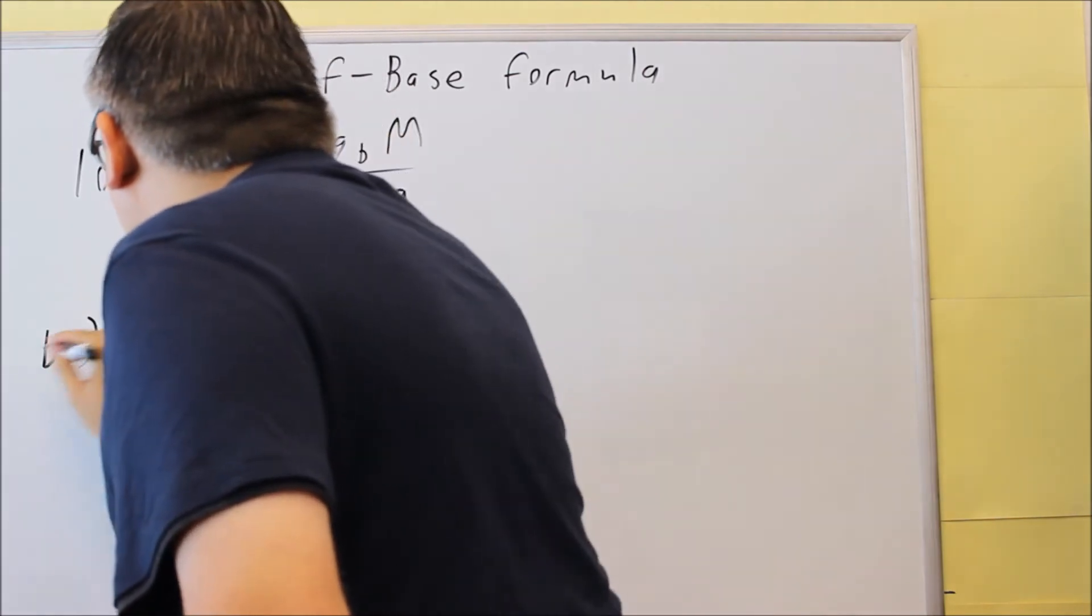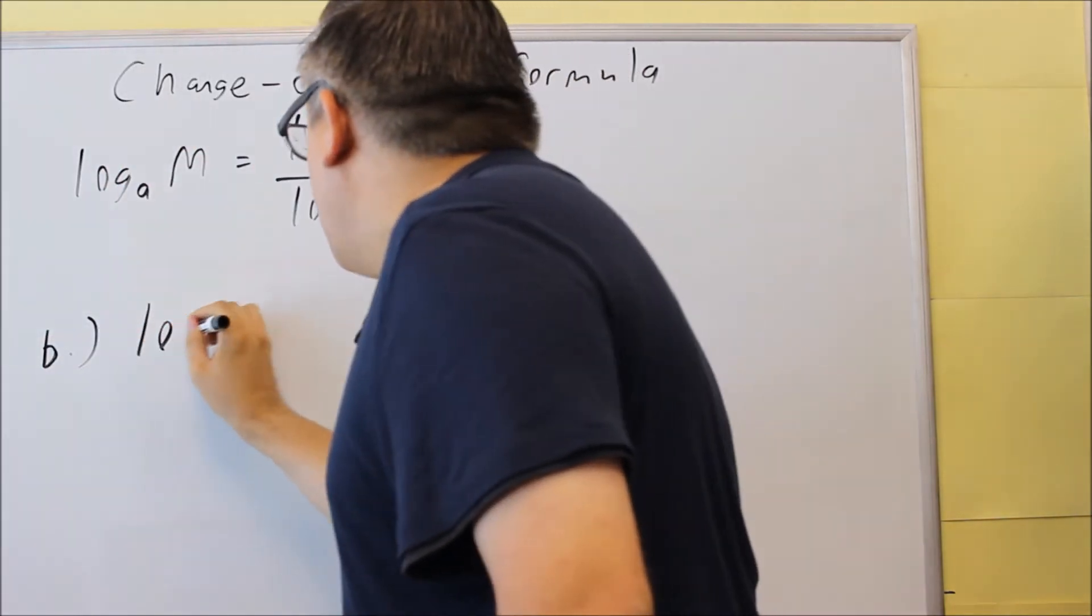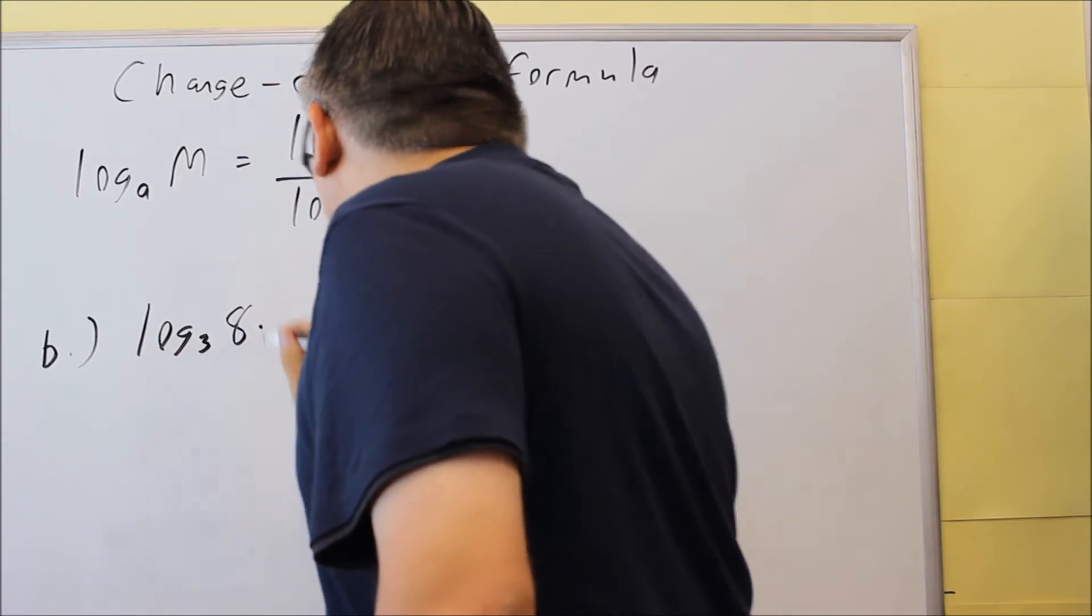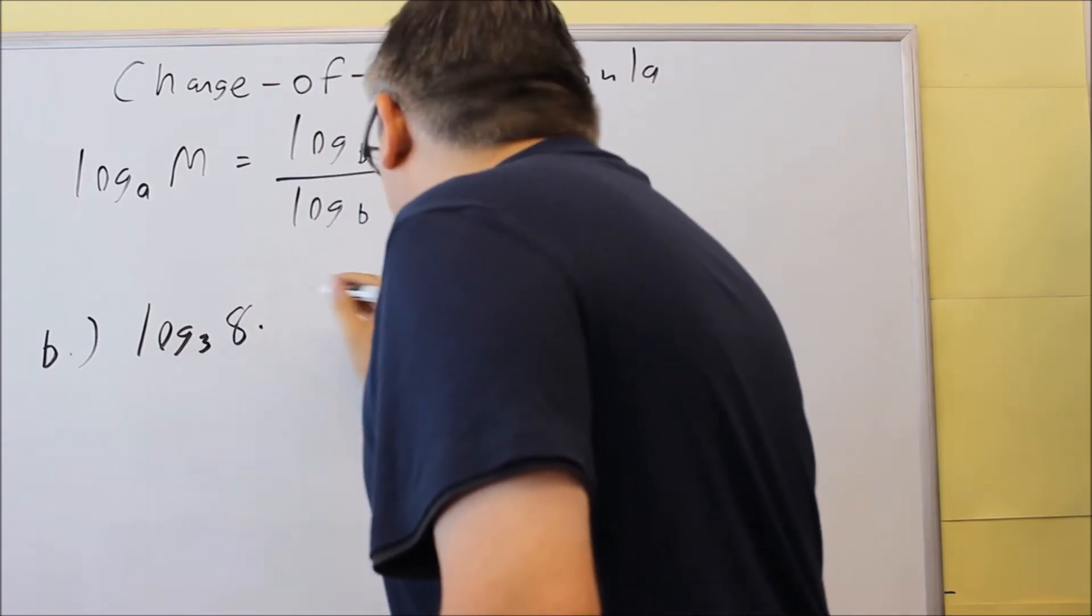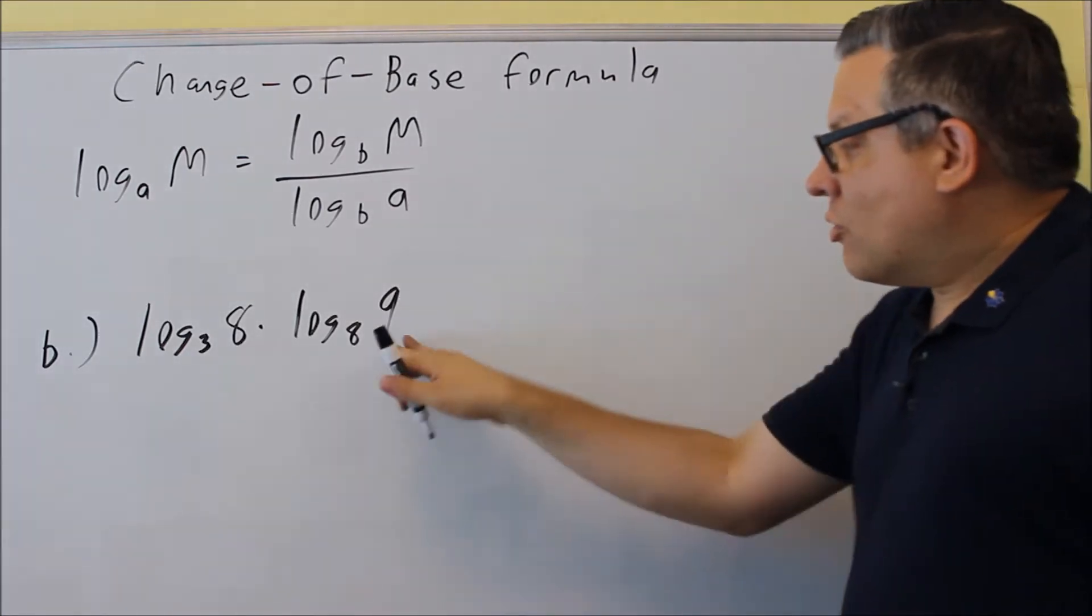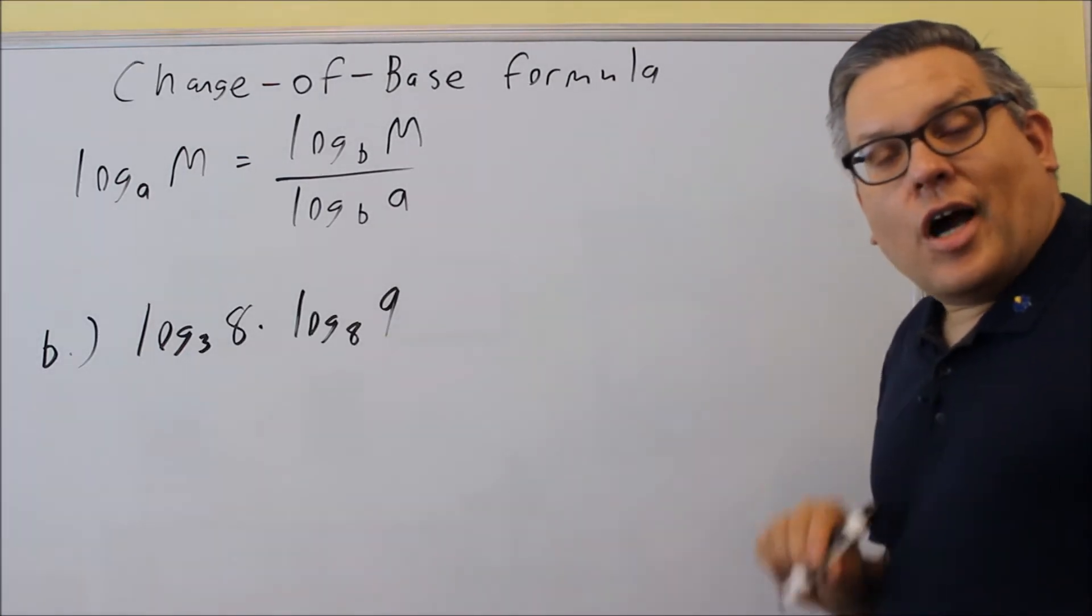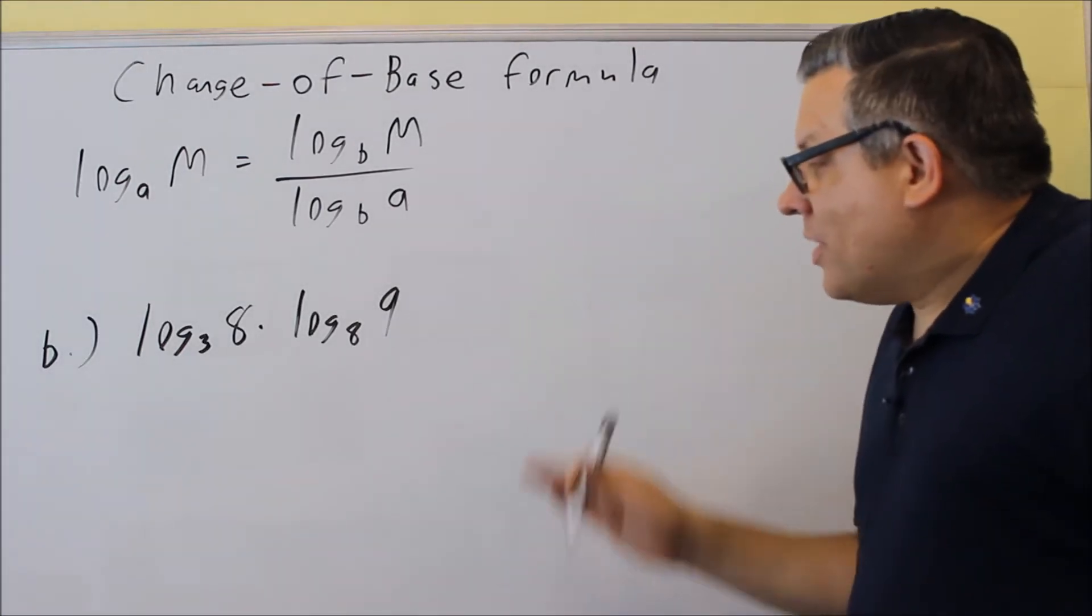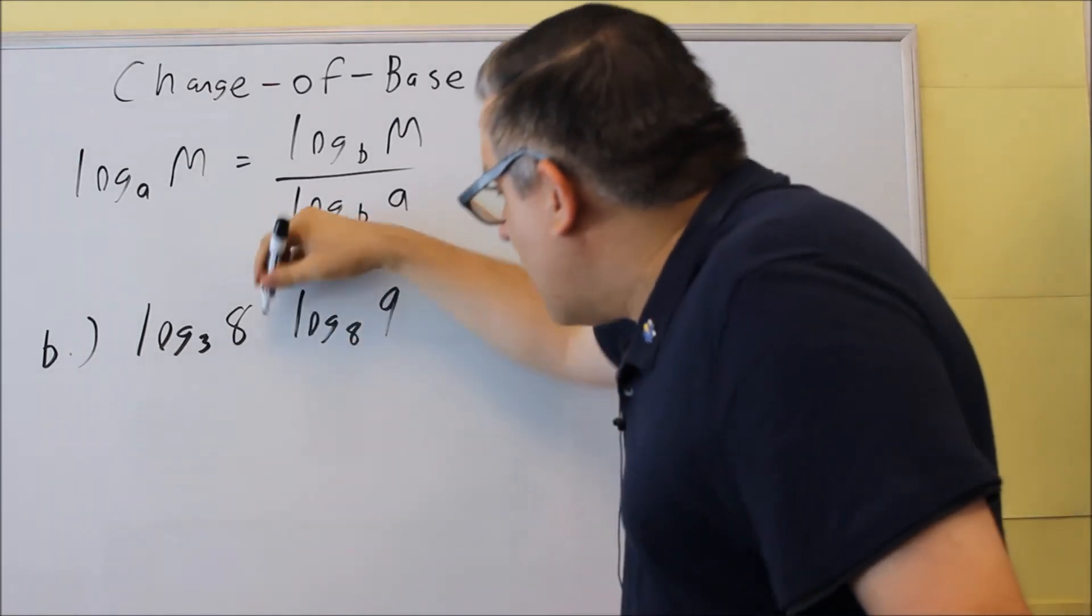And part B would be the same type of problem. You're still calculating, and we're going to do this one also to two decimal places. So let's calculate that one to two decimal places just like the other one. Now because I have, this is a multiplication symbol.